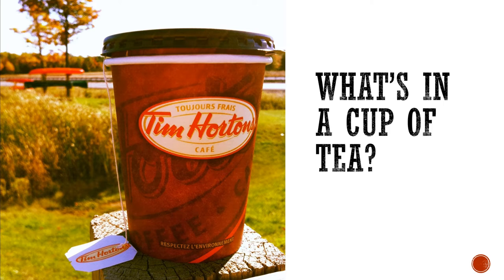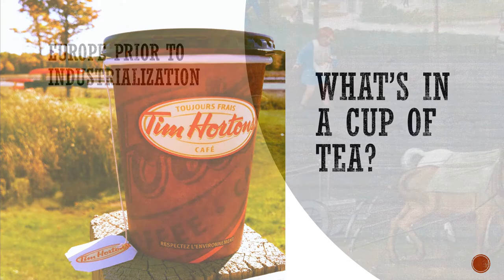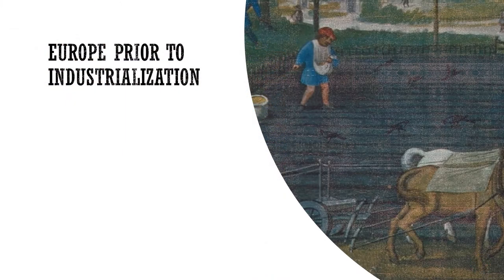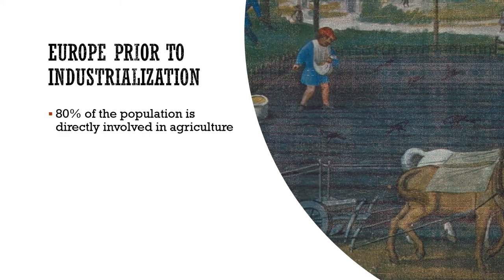No doubt tens of thousands of people were paid a small slice of your $2 just so you could have tea in the morning. This is the very definition of a complex economy that the Industrial Revolution made possible. So what was it like prior to industrialization? Nearly 80% of the population was involved in some form of agriculture, and nearly 95% of the population lived in a rural setting.